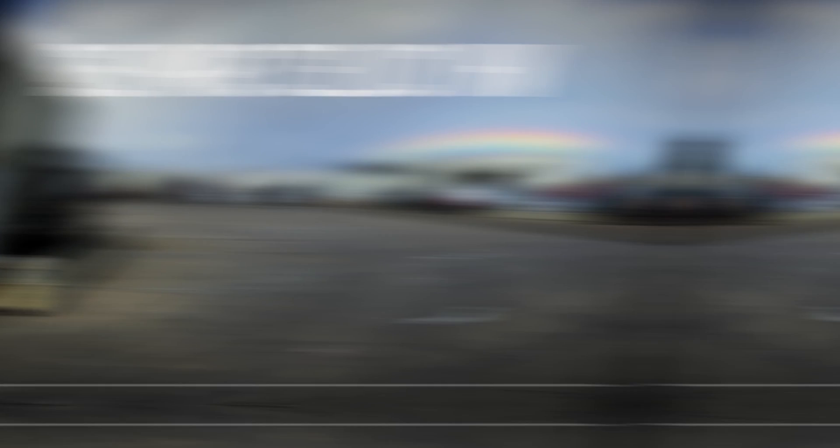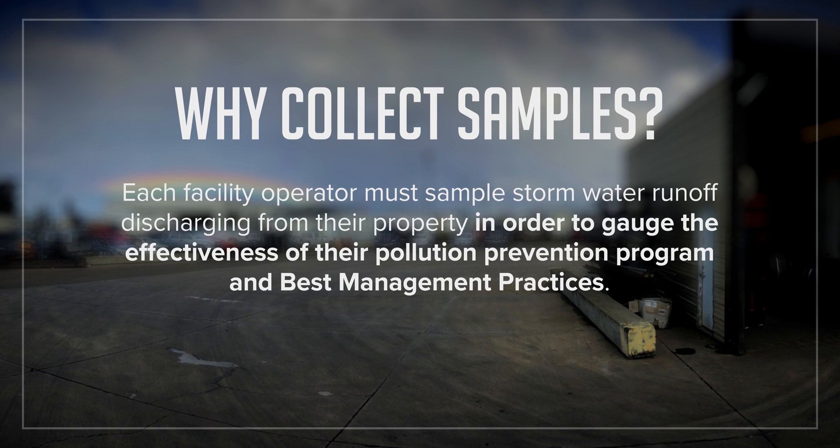Why do we collect stormwater samples? What are we trying to determine? The California Water Board's Industrial General Permit requires each facility operator to sample stormwater runoff discharging from their property in order to gauge the effectiveness of their pollution prevention program and best management practices. Because these stormwater samples are evaluating the facility's effectiveness at preventing or removing pollutants, they should be representative — an unbiased snapshot of stormwater quality associated with the facility's industrial activity. A representative sample should not be the cleanest water you can find and it also shouldn't be the dirtiest; think of it as reflecting the average quality of the facility's stormwater runoff.